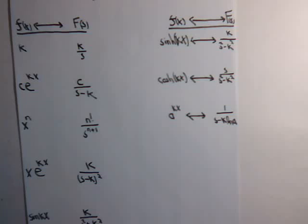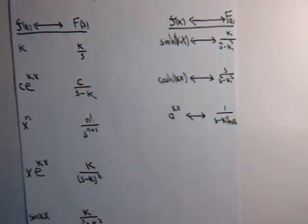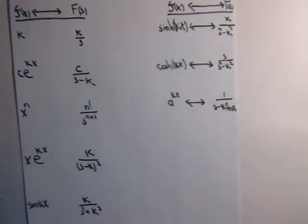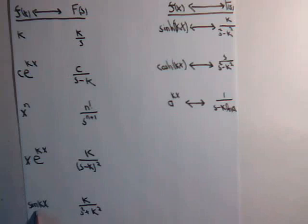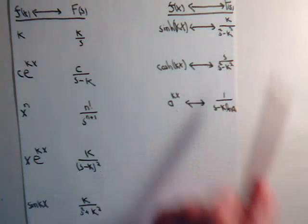Hyperbolic sine of kx, that is equal to k divided by s squared minus k squared. And notice how similar that is to the sine of kx. This is k over s squared plus k squared. Here we have k over s squared minus k squared.